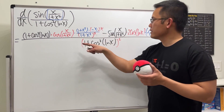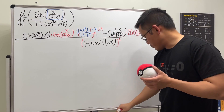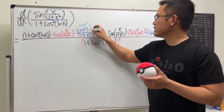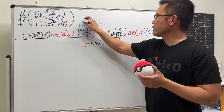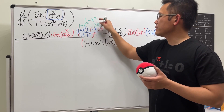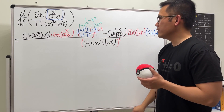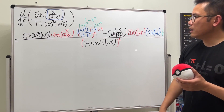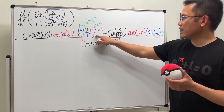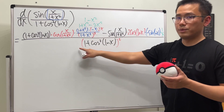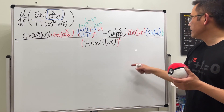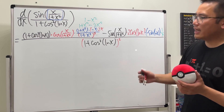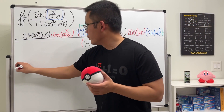Let's simplify the inner fraction on top. We have (1 + x²) minus 2x², which simplifies to just (1 − x²). So we have (1 − x²) over (1 + x²)². Then I'm going to multiply the top and bottom by x as well — just keep that in mind.